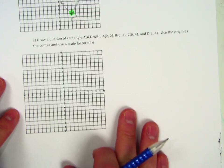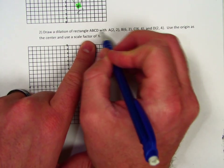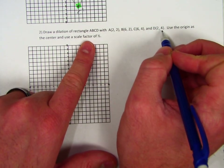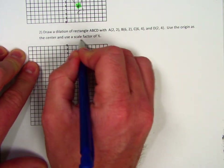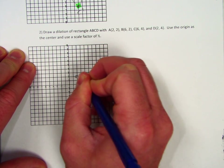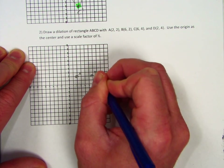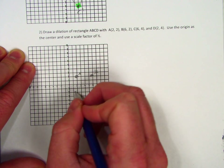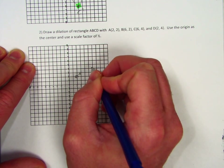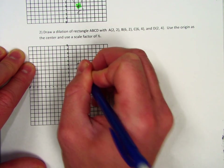Now let's look at another example where the scale factor is a fraction rather than a whole number. This time we're dealing with a rectangle with given vertices, and the scale factor is one-half. I'll start by plotting all the points: A at (2, 2), B at (6, 2), C at (6, 4), and D at (2, 4).